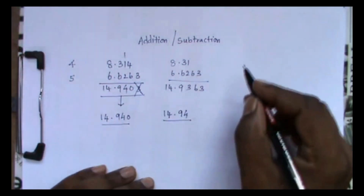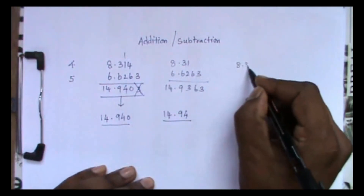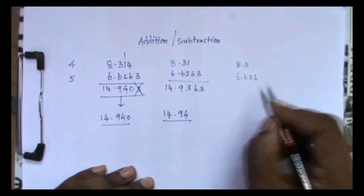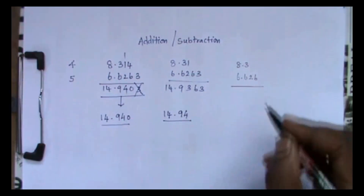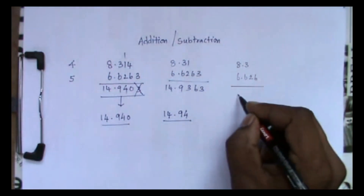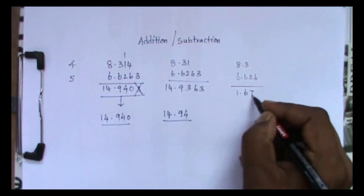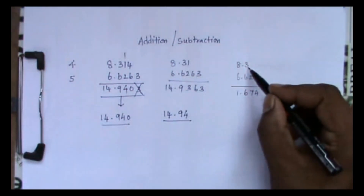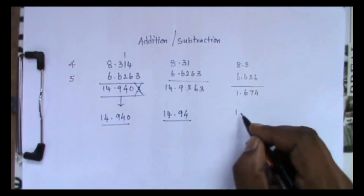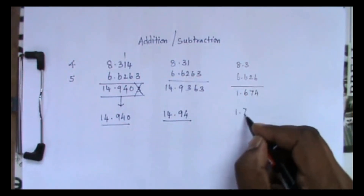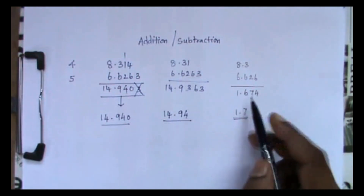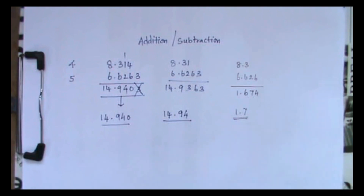For subtraction, consider 8.3 minus 6.666. When you subtract you get 1.634. The first value has only one decimal place, so the final answer should have only one decimal place. Since the next digit is more than five, we round off, giving the final answer as 1.7.